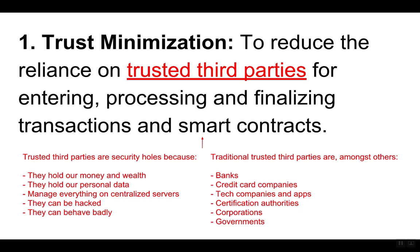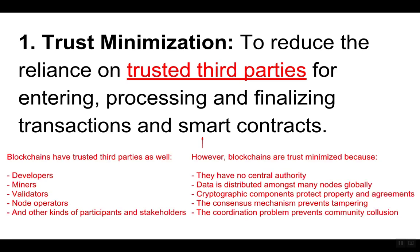Traditional trusted third parties are, amongst others, banks, credit card companies, tech companies and apps, certification authorities, corporations, and governments. Blockchains have trusted third parties as well — for example, developers, miners, validators, node operators and other kinds of participants and stakeholders.